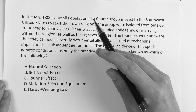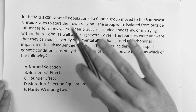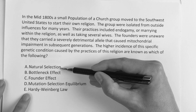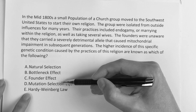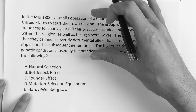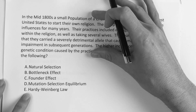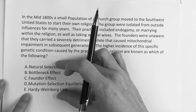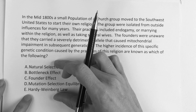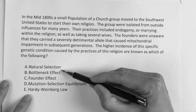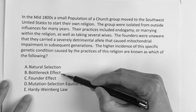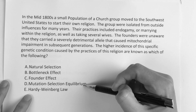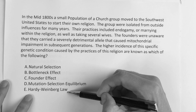This is a population genetics type of question, and you can see by the answer choices they want to know which term most closely identifies the description. The choices are: natural selection, bottleneck effect, founder effect, mutation selection equilibrium, and Hardy-Weinberg law.